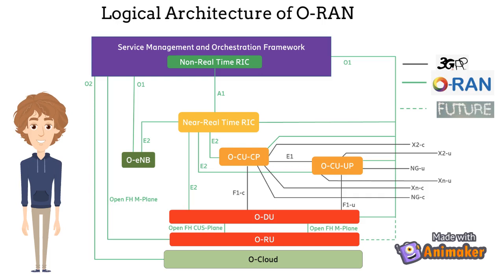Next is the Ocloud. It is the cloud computing platform comprising a collection of physical infrastructure nodes that meet ORAN requirements to host the relevant ORAN functions, such as near-RT RIC, OCUCP, OCUUP, and ODU, along with supporting software components such as operating system, virtual machine, and container runtime. The Open Fronthaul M-Plane interface between SMO and ORU is to support ORU management in hybrid mode.